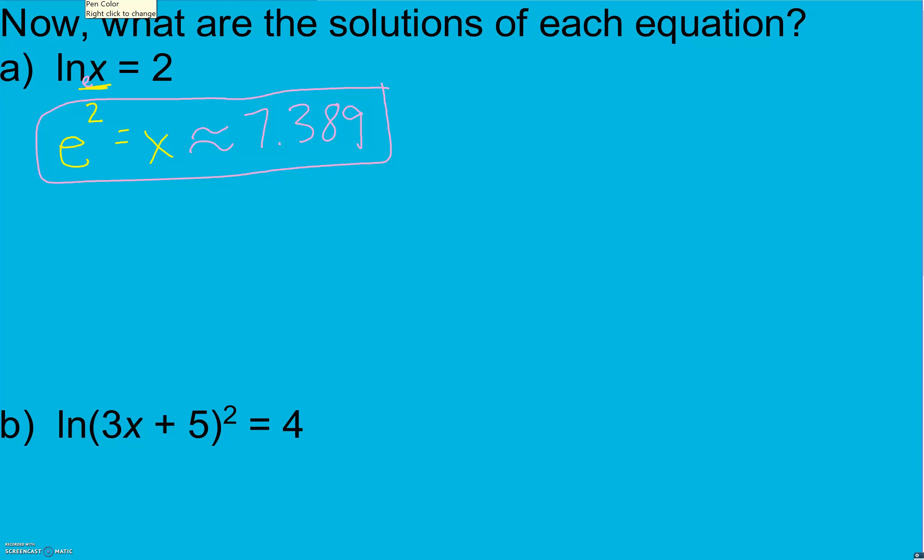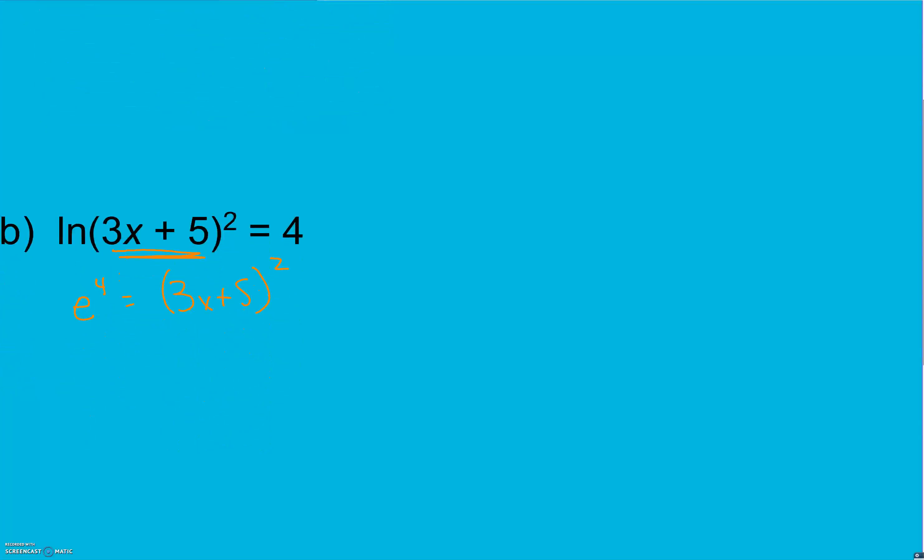Next one. Same idea here. I have a variable inside my logarithm, so to get rid of it I take e to the fourth power equals 3x plus 5 squared. To get rid of the square I take the square root. Remember when you take the square root it's plus or minus e. Again this is square root which means we can divide by 2 and get e to the second power. That's from last chapter when we simplified radicals. Equals 3x plus 5.